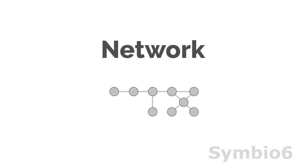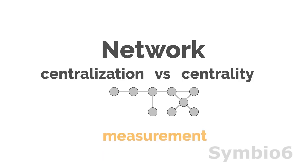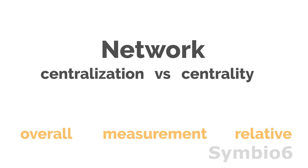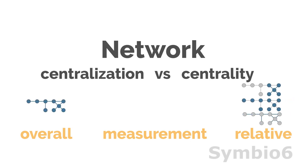The centrality in a network can be measured at different levels: network, group, node, and link. The idea of network centrality is to measure the overall centralization of a network and refers to properties of the network structure as a whole. So centralization does not refer to the relative importance of nodes, but to the overall coherence of a network. Therefore, to avoid confusion, we talk in this video about network centralization and group, node, or link centrality.